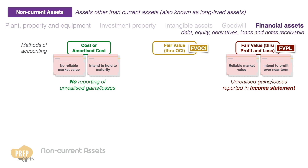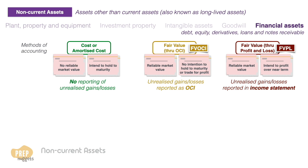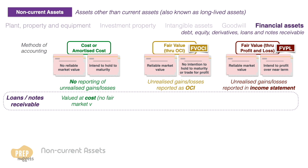For securities that have reliable market values but are bought with neither the intent to be traded nor to be held to maturity, fair value through OCI will be appropriate, with unrealized gains and losses reported as other comprehensive income. For both IFRS and US GAAP, loans and notes receivable are measured at cost, because these securities do not have reliable market values.